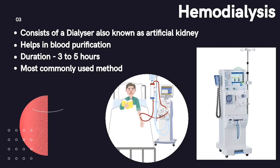What is hemodialysis? Hemodialysis is a very long process and it is the most commonly used method. It consists of a dialyzer, also known as an artificial kidney, which removes excess waste and fluids from the blood and returns purified blood to the patient's body. During hemodialysis, the surgeon performs an operation to remove blood from the patient's body and allow it to enter the dialysis machine. The process lasts 3 to 5 hours and is done 3 times per week, depending on the patient's condition.